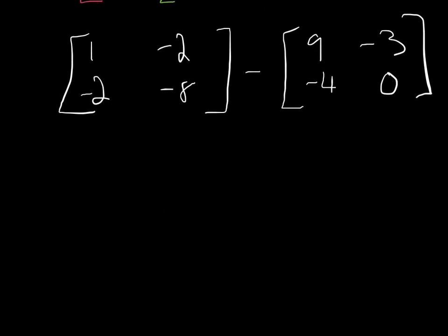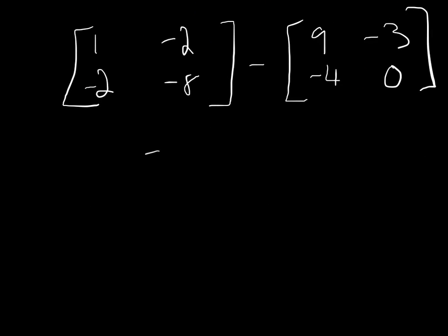And so now we're just going to subtract. And again, I'm going to do this rather quickly. I'm not going to show the full steps because that is a different video. So 1 minus 9, so 1 minus 9 is negative 8. Negative 2 minus a negative 3. So minus a negative, we add 3. So negative 2 plus 3 will give me 1. Negative 2 minus a negative 4 is going to be plus 4. That will give me 2. And negative 8 minus 0 stays negative 8. And there is my solution.